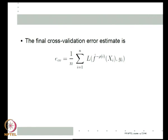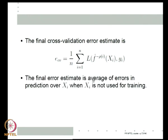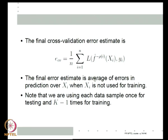Each x_i is used exactly once for testing, and the prediction for x_i is taken from the model that did not use x_i for training. Each data point is used both for testing (once) and training (k-1 times). Because no part is permanently locked up, and each x_i is evaluated on a model learned without it, this gives a more accurate estimate of true error than training error. This is called k-fold cross-validation.